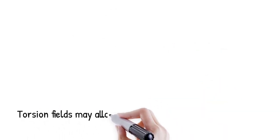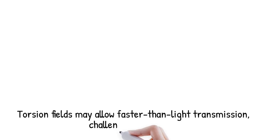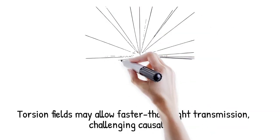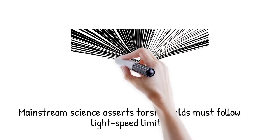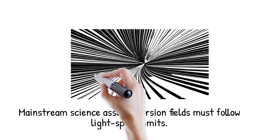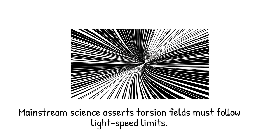Some suggest that torsion fields not constrained by the light cone structure of metric curvature could propagate faster than light, or even instantaneously. If torsion modes decoupled from the usual causal structure, they might enable non-local signaling, raising profound causality concerns. Mainstream consensus holds that any physically meaningful torsion must still respect Lorentz invariance and propagate within light speed limits.